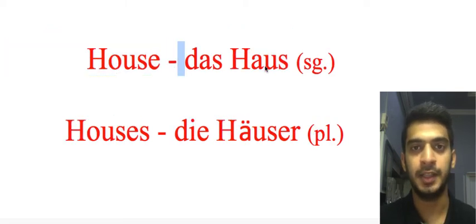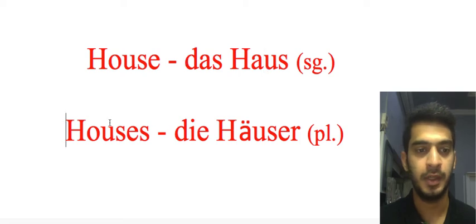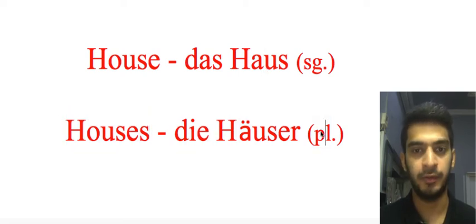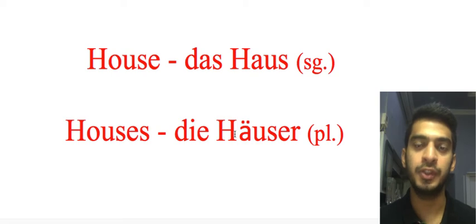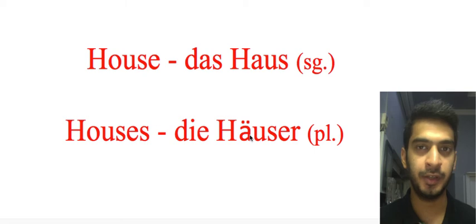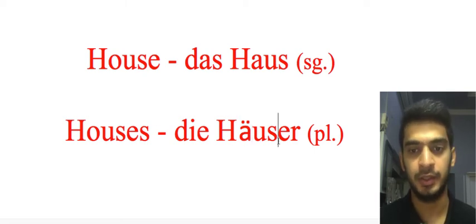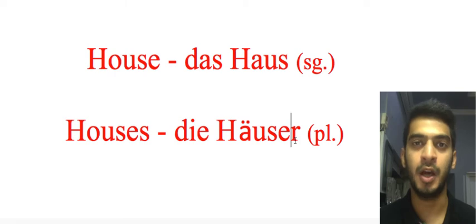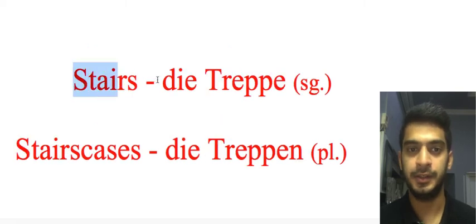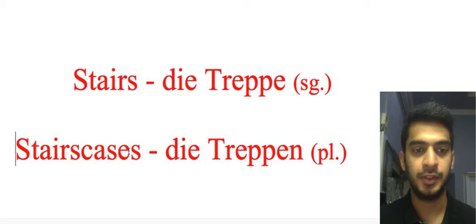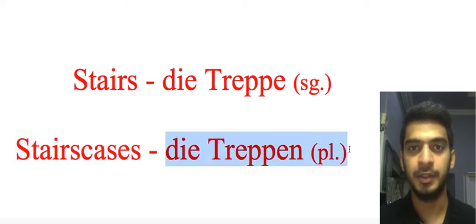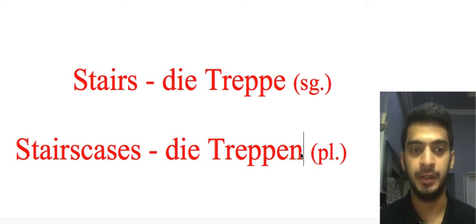'House': 'das Haus' — singular form; 'die Häuser' — plural form. In the plural we have two changes: A with umlaut (two dots above A), plus 'er' at the end. 'Stairs': 'die Treppe' — singular; 'die Treppen' — plural, with an extra N at the end.